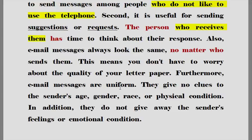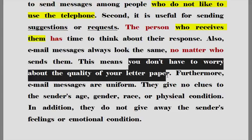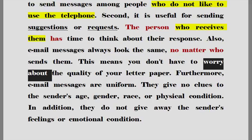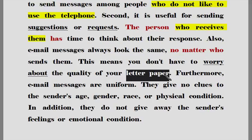대시 생략되어 있는 것을 알고 있습니다. 대시 생략되어 'mean'이라고 하는 동사의 목적어가 되는 거죠. 'don't have to'는 뭐뭐랄 필요가 없다. 'worry about'은 뭐뭐에 대해서 근심하다라고 하는 표현. 편지지의 질에 대해서 당신이 걱정할 필요가 없다라고 하는 것을 의미한다.